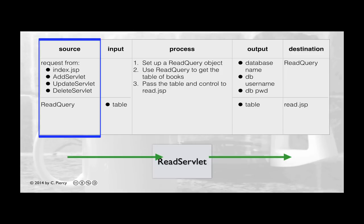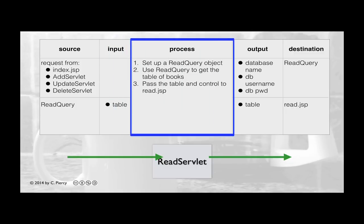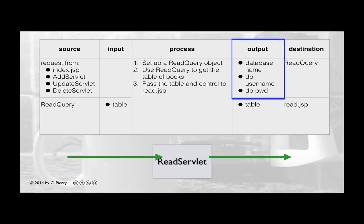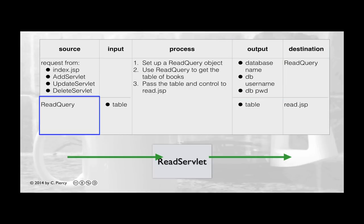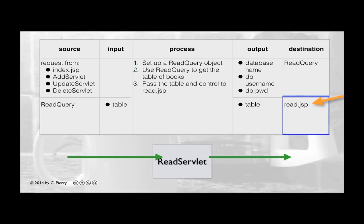We can see that there are two sources. Let's start with the source that is a request, either from index, add servlet, update servlet, or delete servlet. With this request, no input will be coming in to process. The read servlet will then create a read query object. It will use the read query object to get the table of books. When it does this, it will provide the read query with the database name, the username for the database, and the password. Read query will use this and return as input back to our read servlet an HTML table, complete with all the records from the database. Read servlet will then pass this table and control over to read.jsp.